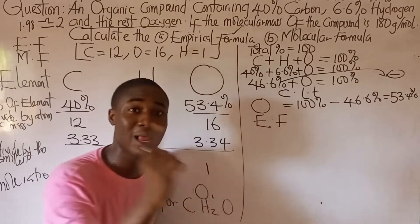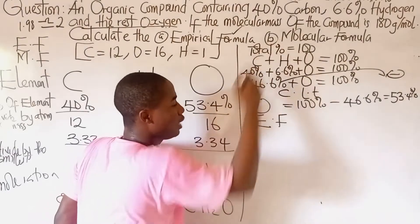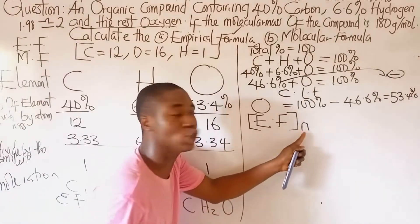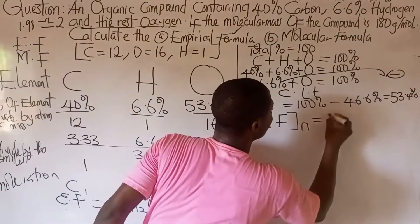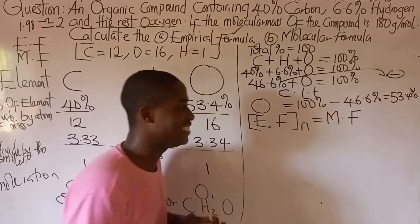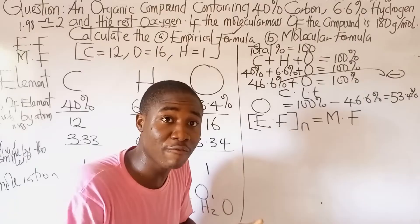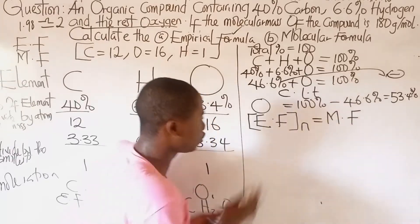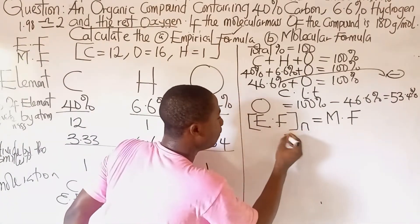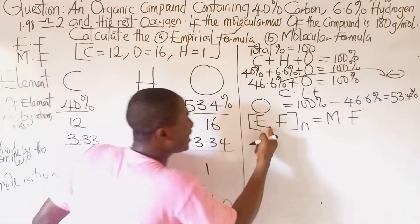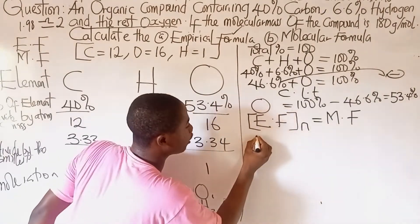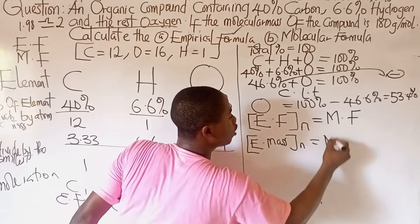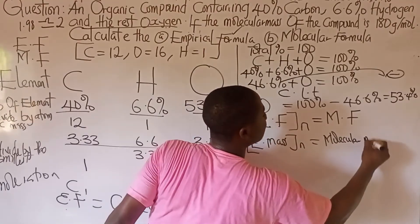The formula is: (empirical formula)ⁿ = molecular formula, where n means number of moles. We then change the formula from formula-form to mass-form: empirical mass × n = molecular mass. So here, empirical mass times n equals molecular mass.